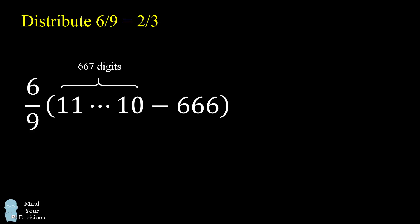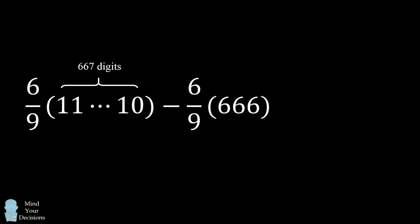We'll now distribute the term 6 over 9 to each of these. So then we can simplify by multiplying 6/9 times these terms. So the first thing that'll be easier is 6/9 times 666, and that'll be 444. Now how do we figure out the other multiplication?